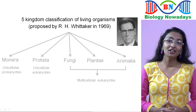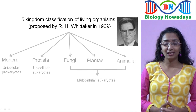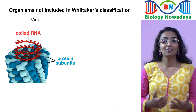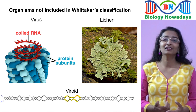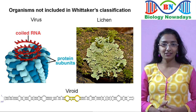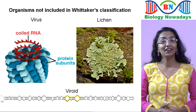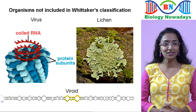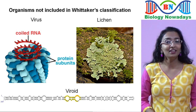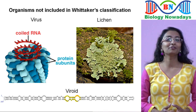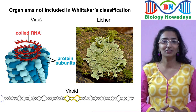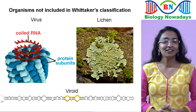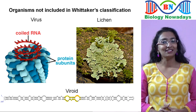However, Whittaker didn't include some organisms like viruses, viroids, and lichens in his classification system. In this video, we will see more about these organisms and why they were not classified under any of the five kingdoms of Whittaker's classification. First, let's see about viruses.